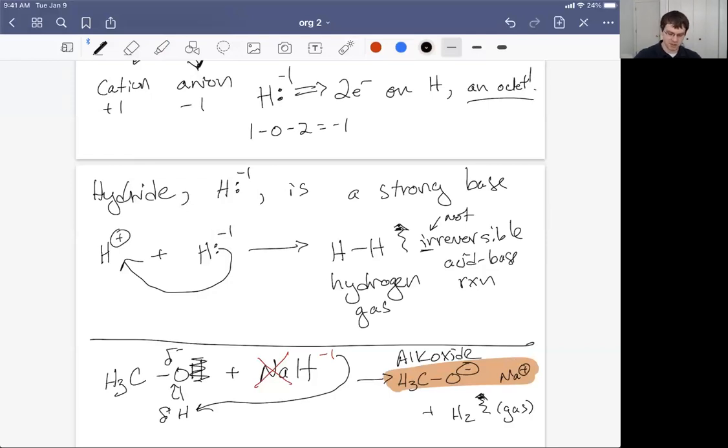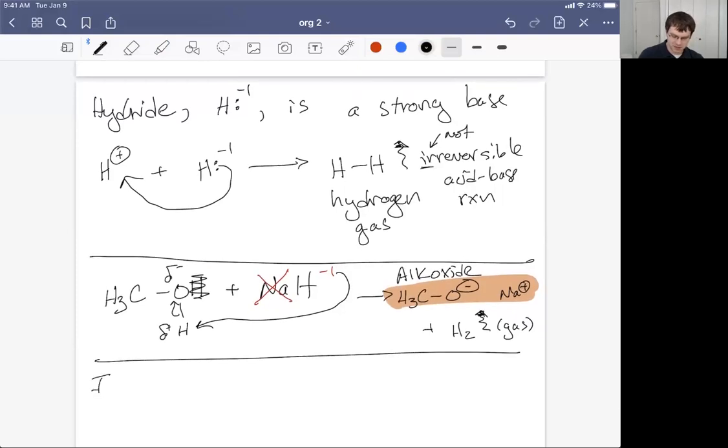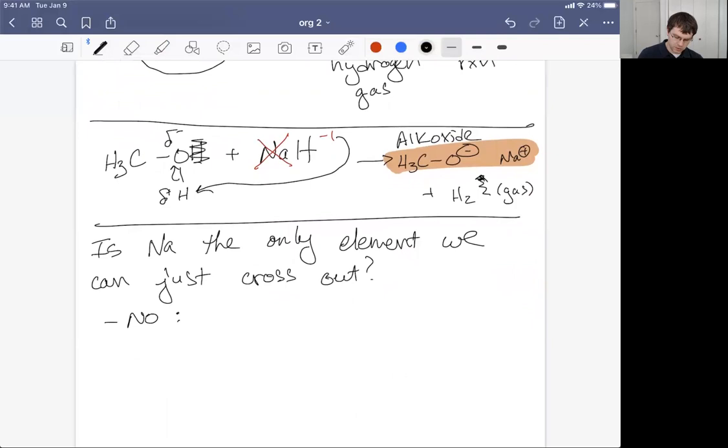What about some other elements that we can sort of just cross out? Is sodium the only element we can just cross out? And the answer is no, we can actually consider other metals. We could also do lithium and potassium. If we look at the periodic table, we got lithium, sodium, and potassium. This is group one. We can include lithium and potassium. When we see those, we can also consider those as strong bases.